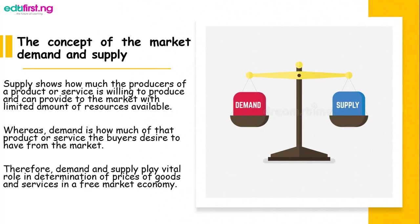Now the concept of market demand and supply — what are the major concepts in this market? These two major concepts are demand and supply. Supply shows how much the producer of the product or services is willing to produce, while demand is how much of that product or services the buyer desires to have from the market. We can conclude that demand and supply play a very critical role in the determination of price of goods and services.